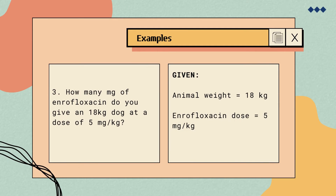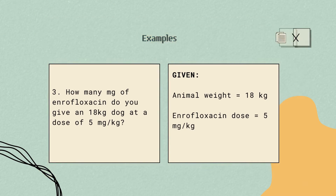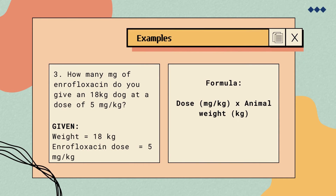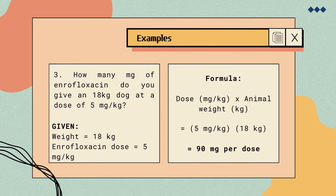Problem number 3: how many milligrams of enrofloxacin do you give an 18-kilogram dog at a dose of 5 milligrams per kilogram? Given: the weight of the dog is 18 kilograms and the dose of enrofloxacin is 5 milligrams per kilogram. Using the formula — animal weight multiplied by the dose — we have 18 kg times 5 mg/kg, which equals 90 milligrams per dose. Therefore, we will give 90 milligrams of enrofloxacin to an 18-kilogram dog.